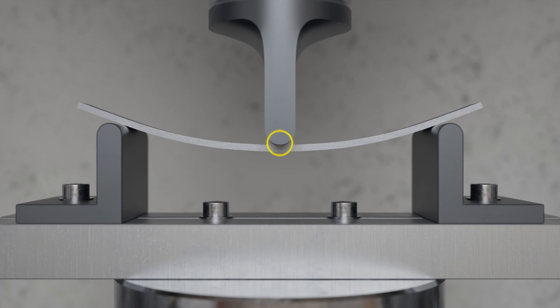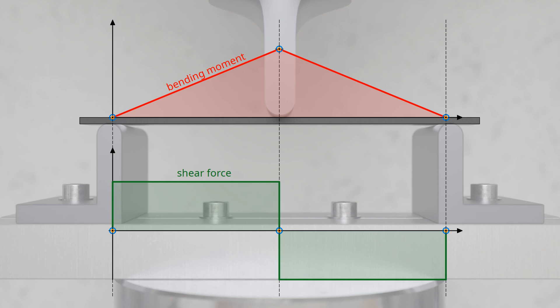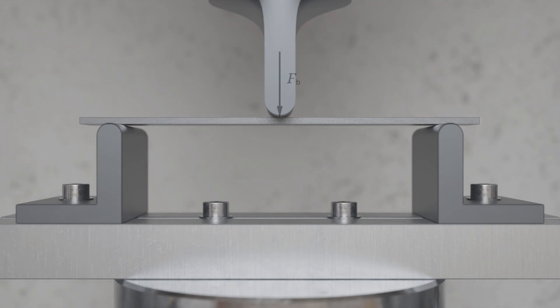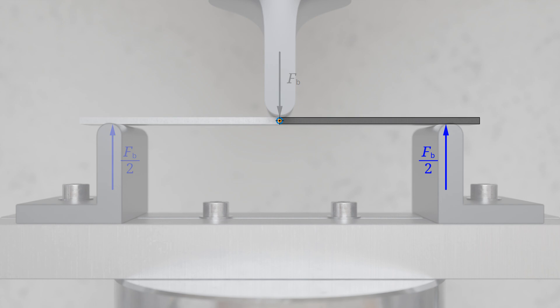In the case of a bending load, the greatest torque is referred to as bending moment. Starting from the center of the specimen, the bending moment decreases linearly up to the two supports. The diagram shows the course of the bending moment and the shear force over the entire specimen length. The greatest bending moment at the point of maximum deflection can be determined using the following procedure. We take a closer look at the acting forces. Due to the symmetrical arrangement, the two supports each absorb half of the bending force of the loading fin. We consider the specimen at the point of maximum deflection isolated from its surroundings in order to determine the bending moment at this point.